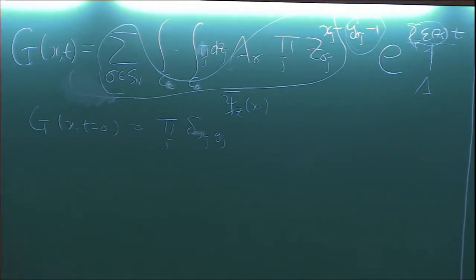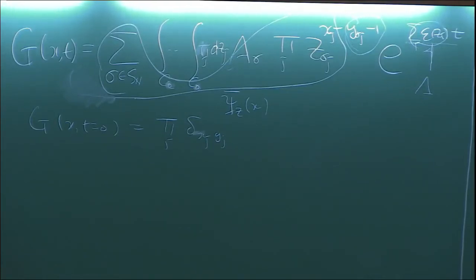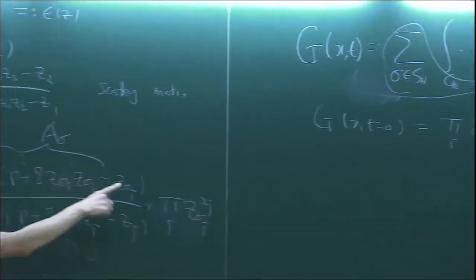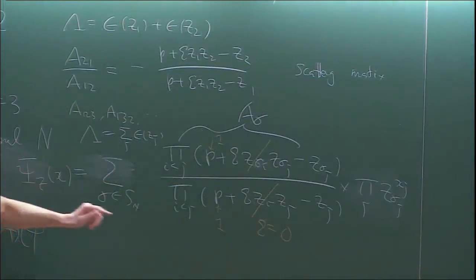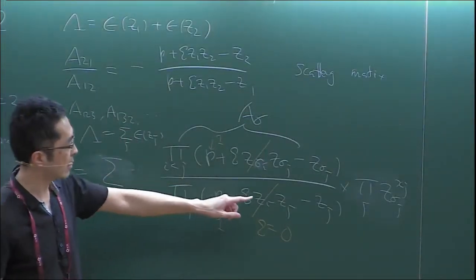For TASEP, we set p=1 and q=0. This simplifies the wave function a lot. For q=0, this part of the scattering matrix disappears and becomes just 1. So the coefficient A_sigma is just a product of factors of (1 - z_{sigma(j)}) / (1 - z_j). This is much simpler than for general ASEP. In fact, you can now see the determinant structure for this TASEP limit, because this is written in terms of x_j and sigma(j), and we have a summation over permutations — this fits exactly the definition of a determinant.